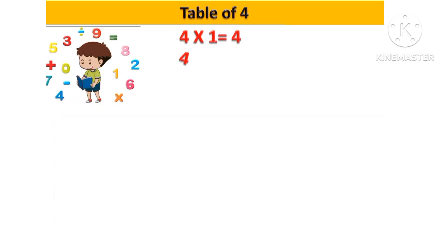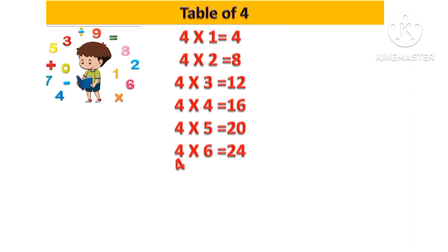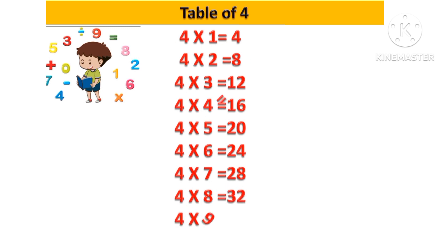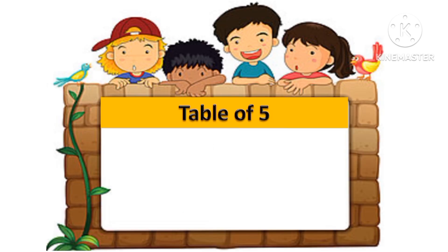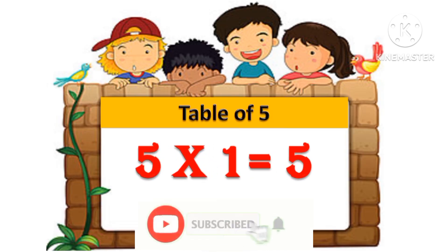Let's revise: 4 one's are 4, 4 two's are 8, 4 three's are 12, 4 four's are 16, 4 five's are 20, 4 six's are 24, 4 seven's are 28, 4 eight's are 32, 4 nine's are 36, 4 ten's are 40. Table of 5: 5 one's are 5.